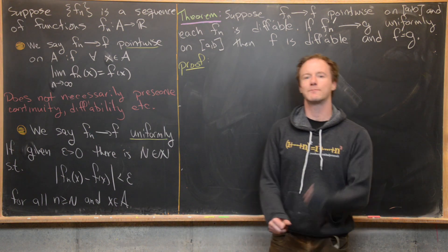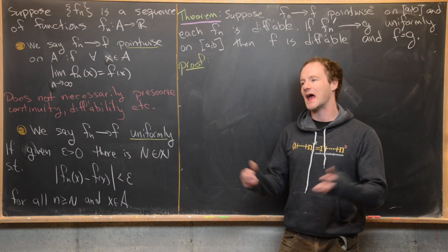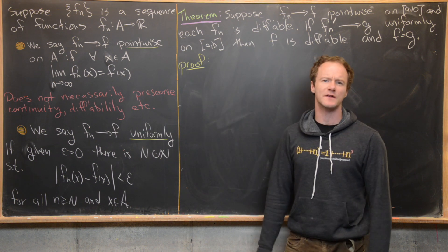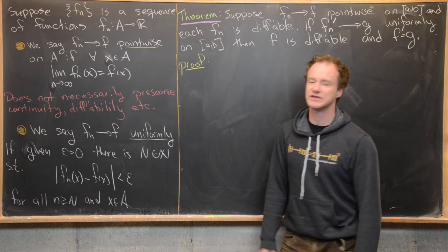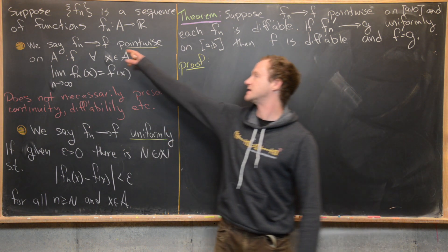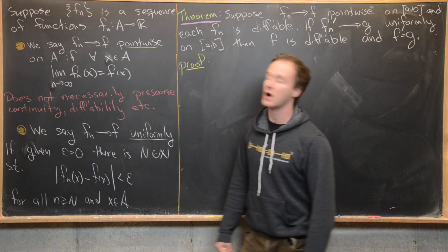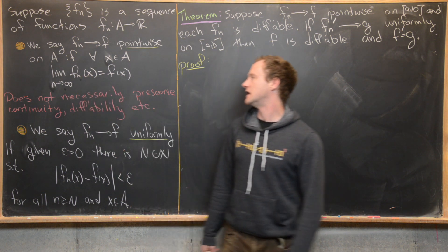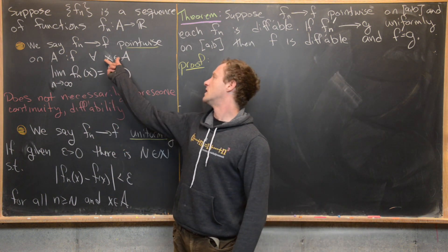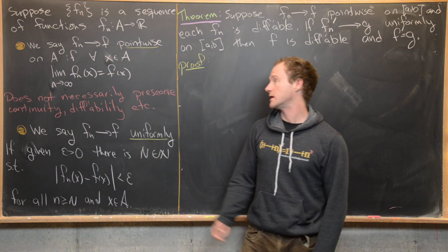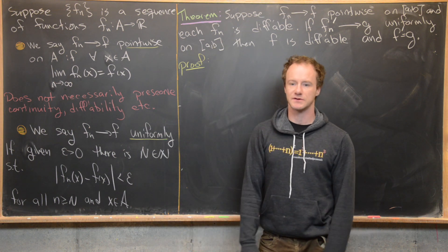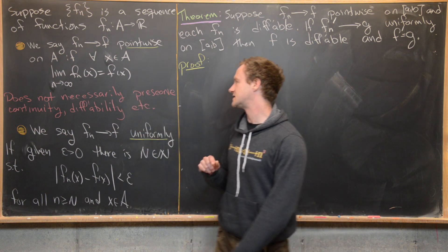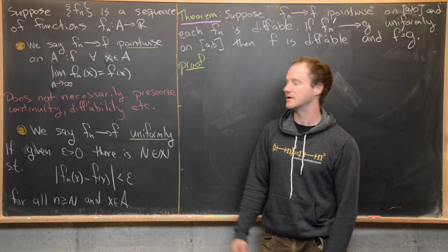In the last couple of videos, we've been investigating pointwise convergence, uniform convergence, and how that works alongside continuity and differentiability. A sequence of functions f_n is said to converge pointwise to f on A if for all x in A, the limit as n approaches infinity of f_n(x) is f(x). Since x is fixed arbitrarily, this is just a sequence of numbers. We saw that pointwise convergence does not necessarily preserve continuity or differentiability.